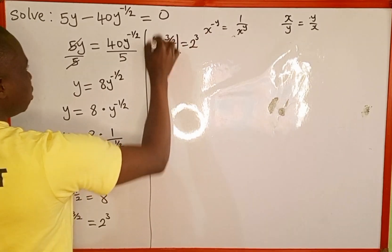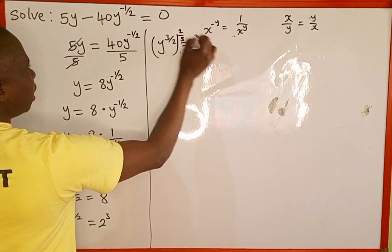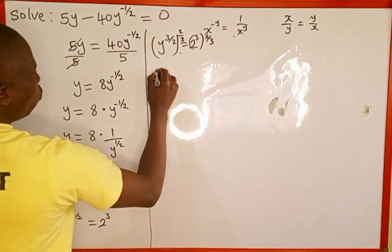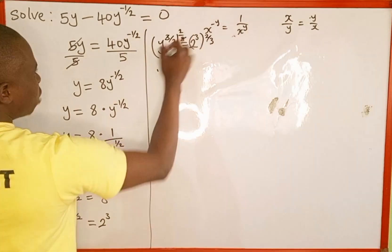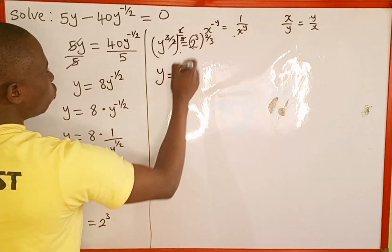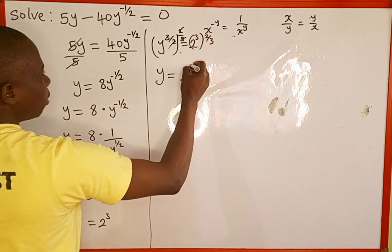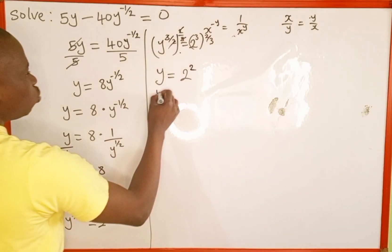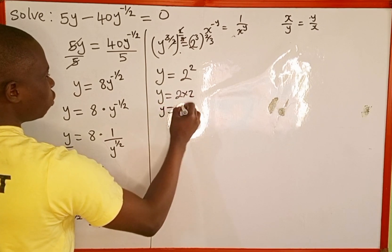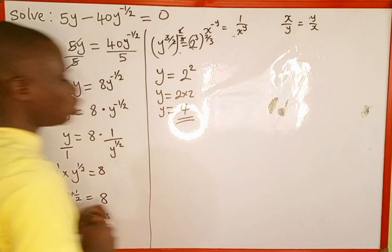When we raise this side by the reciprocal, it's going to be 2 over 3, and also this side is going to be raised to 2 over 3. So the 3 over 2 and the 2 over 3 cancel, leaving y. On the right side, 3 multiplied by 2 over 3 gives 2, and 2 to the power of 2 is 2 multiplied by 2 which gives us 4. Therefore, 4 is the value of y that satisfies this equation.